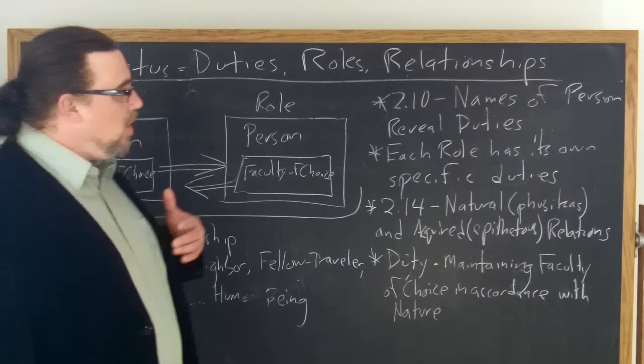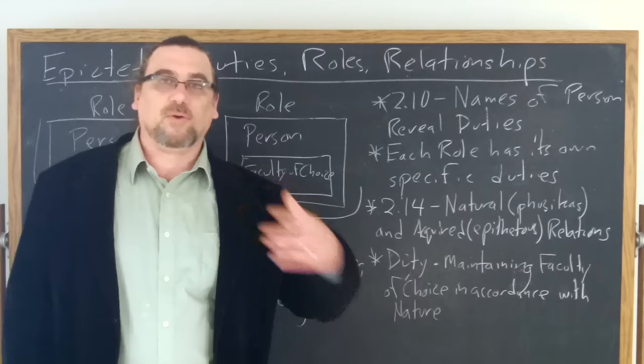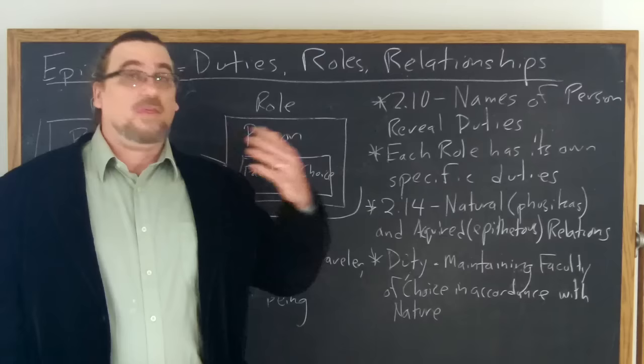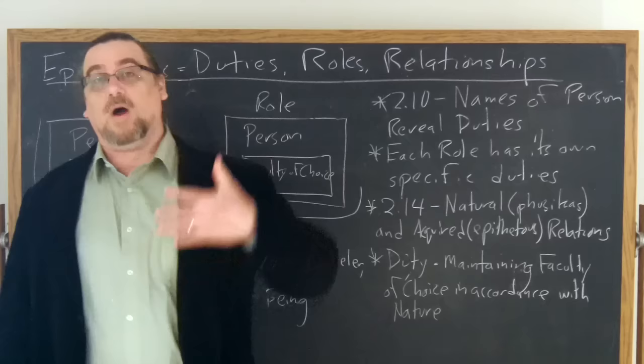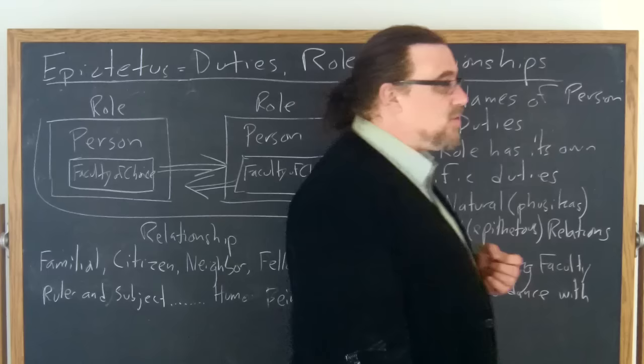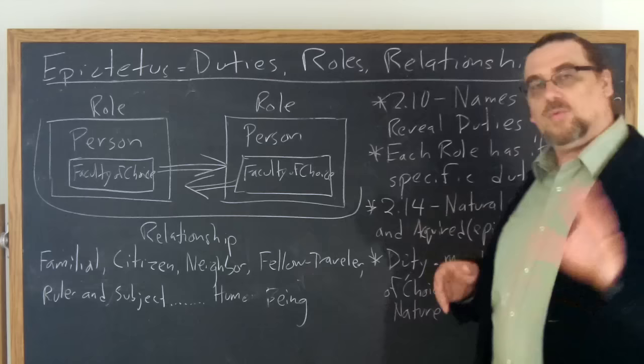We can look at any other role in a similar way. Am I a husband? Well, then there's certain things incumbent upon me as a husband. Am I a father? There's certain things incumbent upon me as a father. Am I going to be a teacher? Well, then there's certain things I ought to be doing as a teacher as well. Likewise, as a student, we can go all the way down the line with this. And you can read the other examples in chapter 10 of book 2, I don't need to go through all of them.